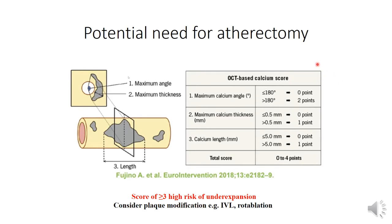Here we come to an important score based on data derived from assessment of calcified plaque: calcium angulation — how much of the vessel circumference it occupies, more than 180 degrees (two quadrants) scores 2 points, less scores 0. Maximum calcium thickness: below 0.5 mm scores 0, above 0.5 mm scores 1. Calcium length: below 5 mm scores 0, above 5 mm scores 1. Total maximum score is 4. A score of 3 or more indicates high risk of stent under-expansion, meaning we should consider plaque modification using instruments like shockwave or rotational ablation.